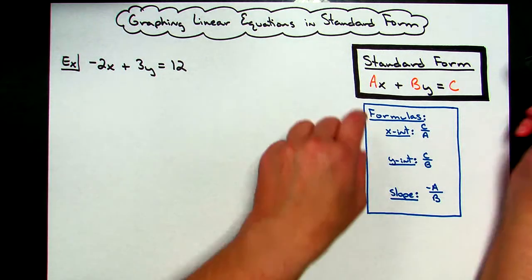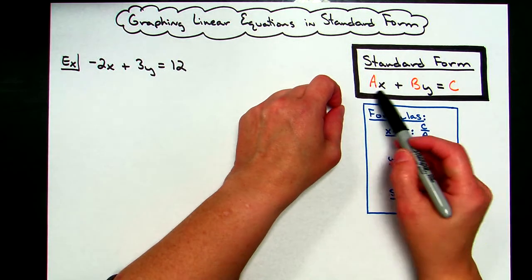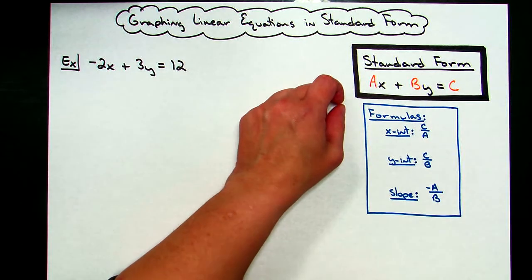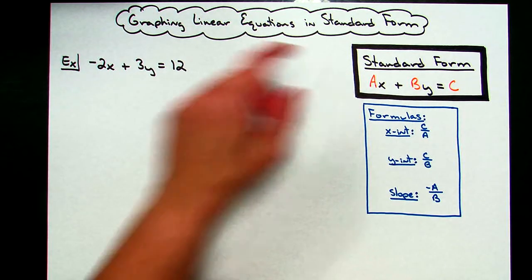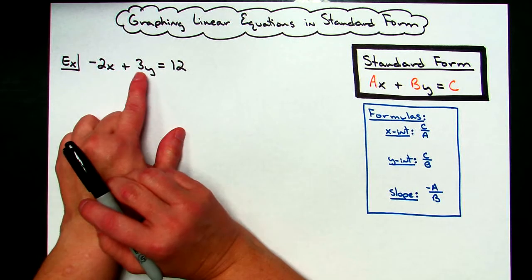Before I go through a first example here, I have standard form written out: Ax plus By equals C. I wrote the A, B, and C in a different color because those are going to be our numbers. As you can see over here, negative 2 is A, 3 is B, and 12 is my C.